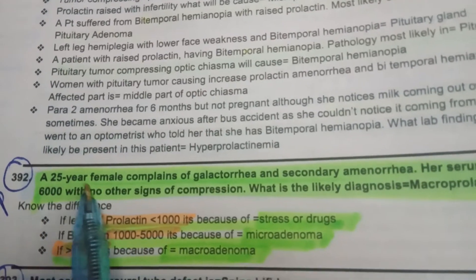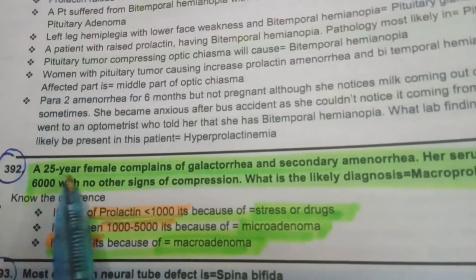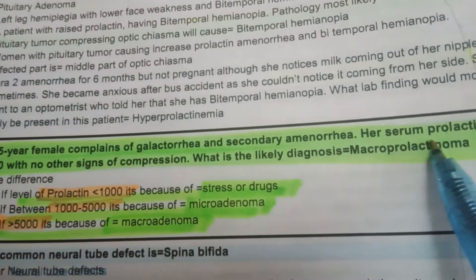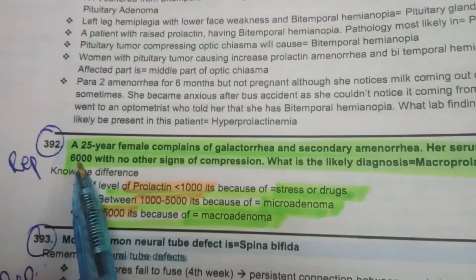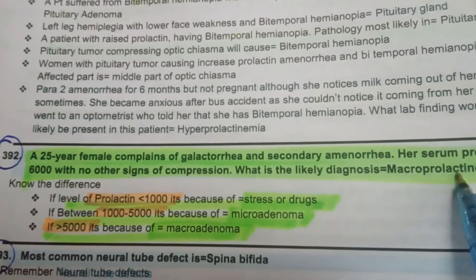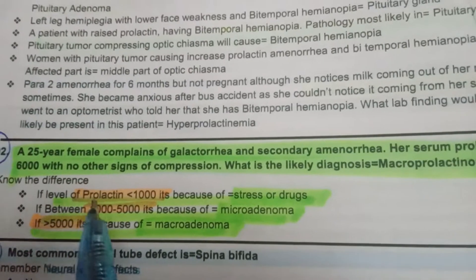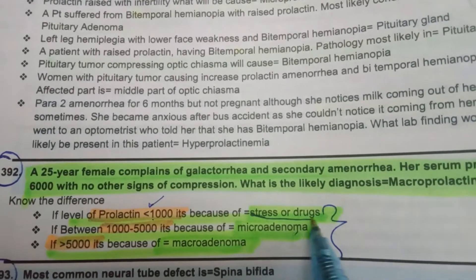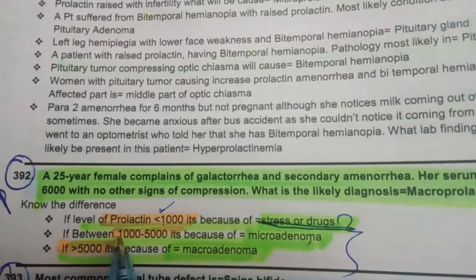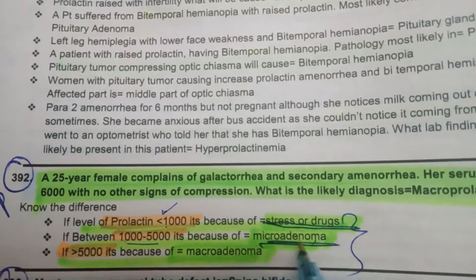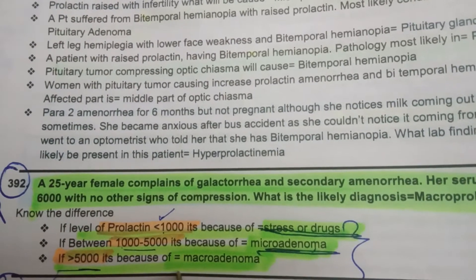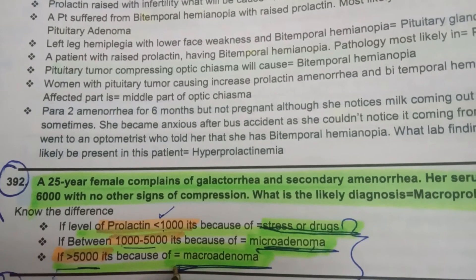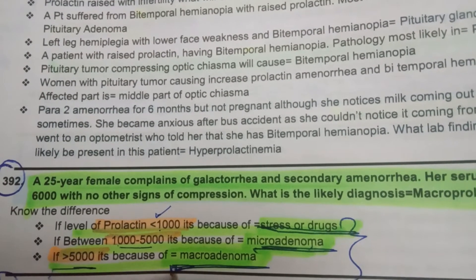Point 392: A 25-year-old female with galactorrhea and secondary amenorrhea, serum prolactin of 6000, and no signs of compression — the likely diagnosis is macroprolactinoma. Rule: prolactin less than 1000 indicates stress or drugs; 1000 to 5000 indicates microadenoma; more than 5000 indicates macroadenoma.